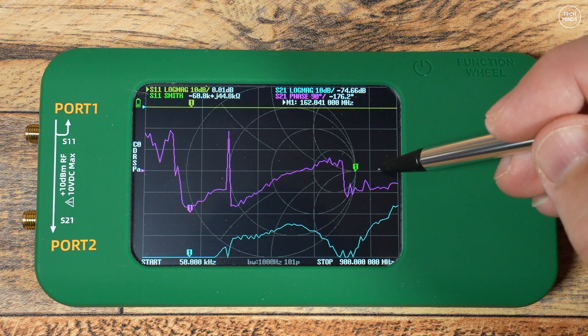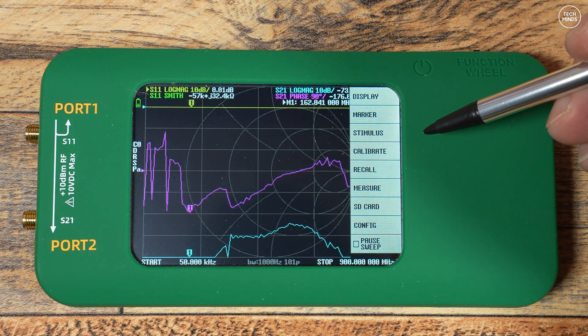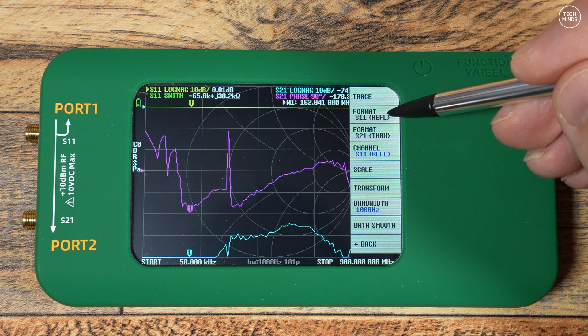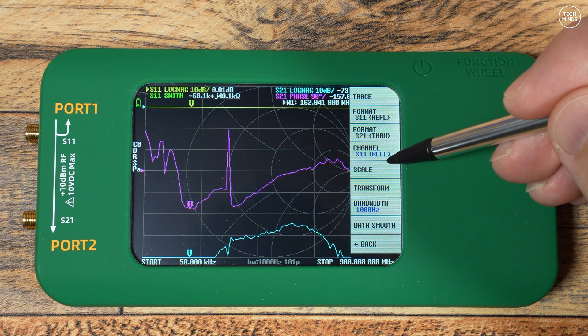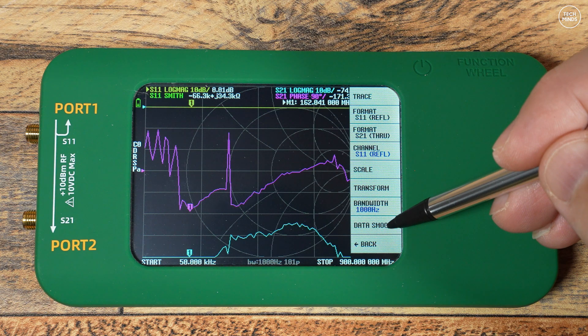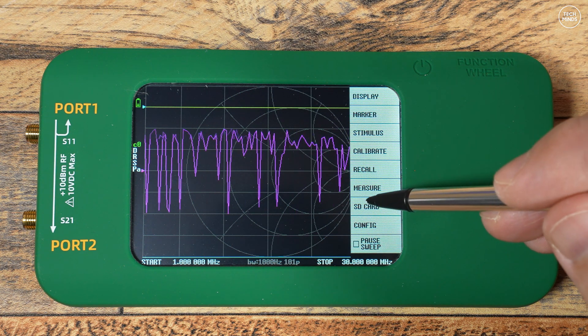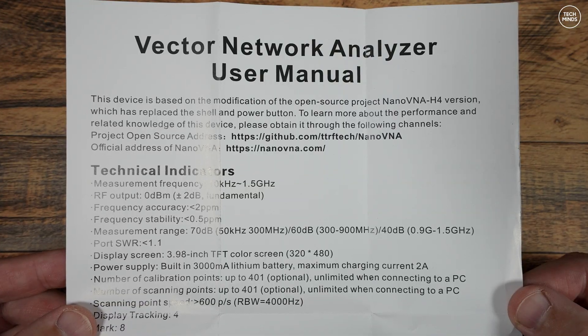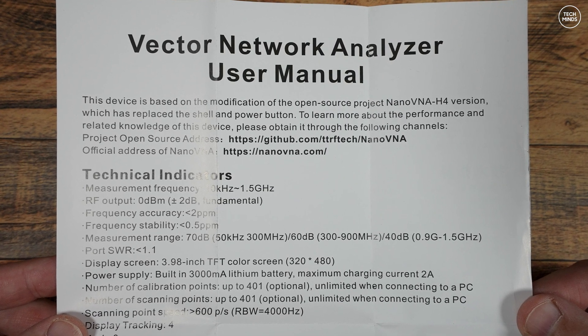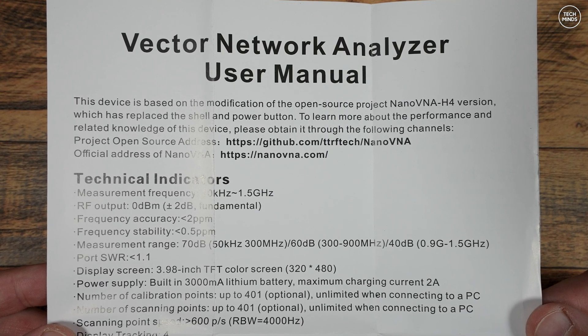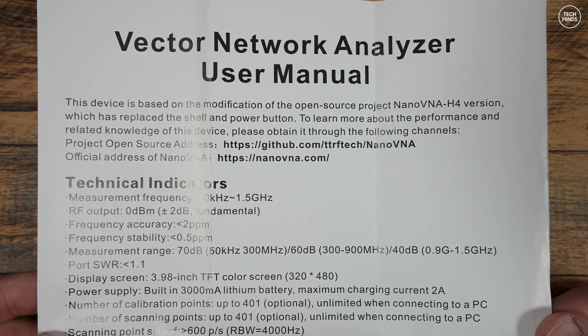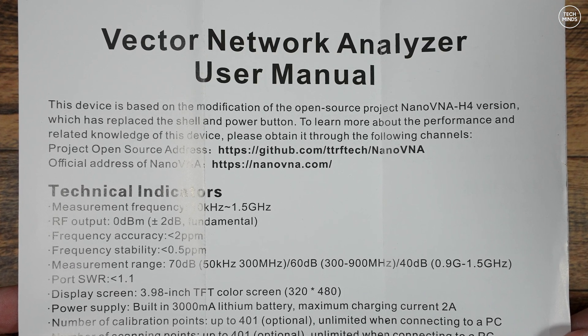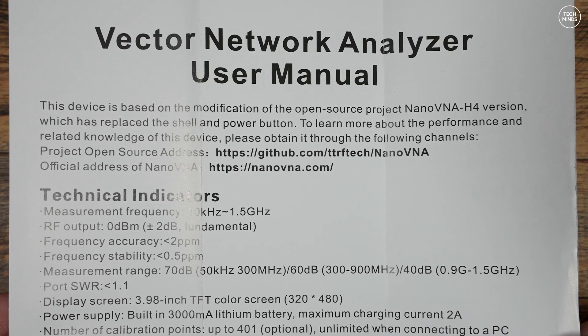The menu system is exactly the same that we've seen before on other VNAs similar to this, and there's lots of YouTube videos already covering this. But let's just take a quick look at the version page so we can get an idea of where the firmware came from. If we quickly refer back to the user's manual or single sheet of paper that came with this VNA, it states that this device is based on the modified firmware of the open source project Nano VNA-H4.